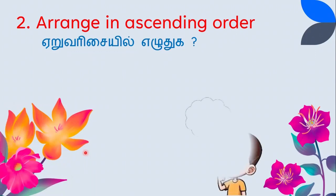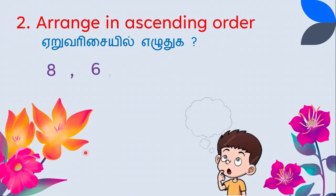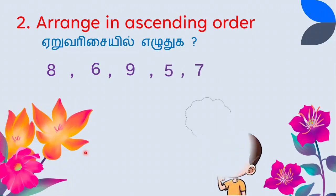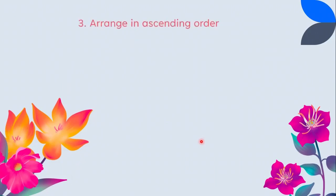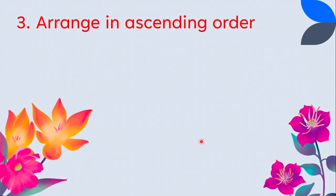Next, arrange in ascending order: the numbers are 8, 6, 9, 5, and 7. The small number is 5, next is 6, next is 7, next is 8, and the big number is 9. So ascending order is 5, 6, 7, 8, 9.